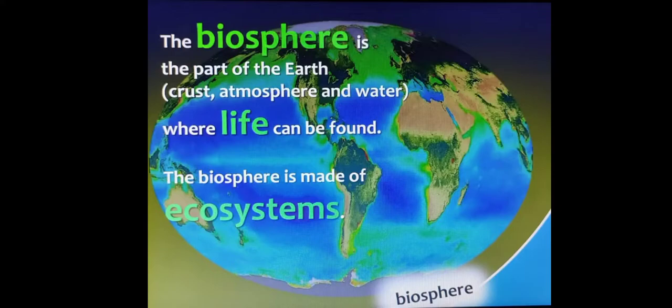Biosphere is earth, water, soil and air, where all the life forms are found. Bio means life and sphere means round. All types of life which are found in this round earth is biosphere. A biosphere is divided into many different ecosystems.